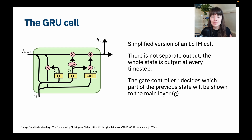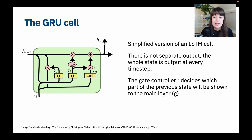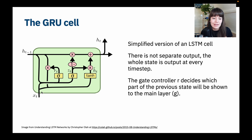The next RNN cell is the GRU cell. GRU cells are basically a simplified version of LSTM, with a similar idea of trying to remember the past more vividly and not forgetting the beginning of a sequence of inputs. There are no separate outputs in GRU cells — the hidden state equals the output. We also have a gate controller R, which determines which part of the previous state will be shown to the main layer. The main information flows from the input through the hyperbolic tangent activation function to the output, and R determines which part of the hidden state is added to this main information flow.